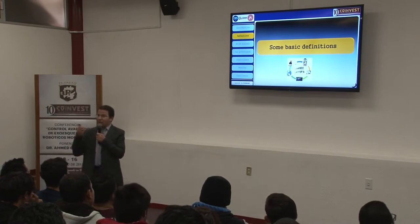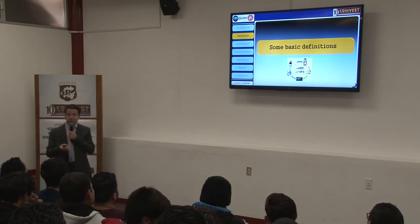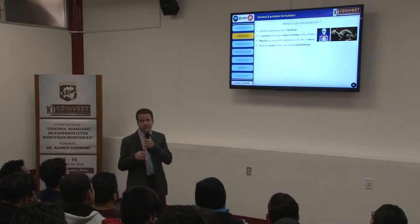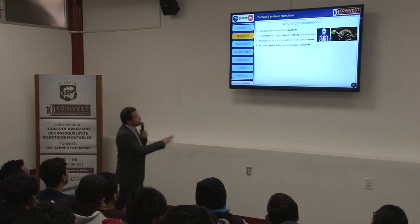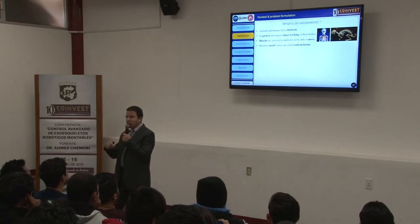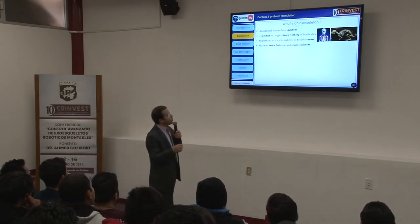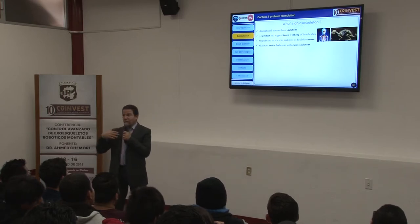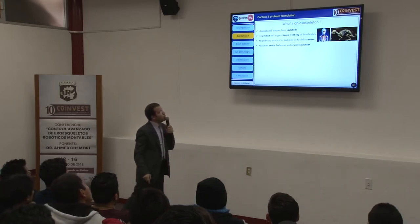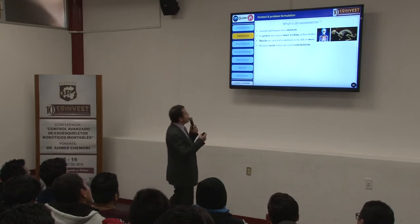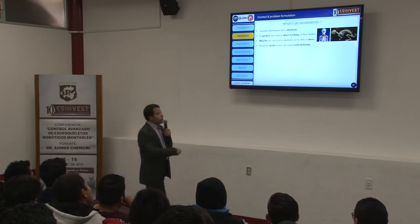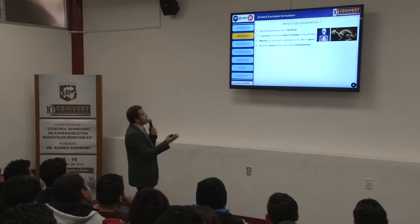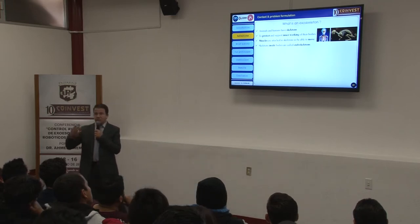Before going further, let me introduce basic definitions to understand what an exoskeleton is, where we can use it, and what challenges exist for design and control. First, what is an exoskeleton? We can see a common point between animals and humans: we have skeletons inside our body. A skeleton is a rigid structure inside the body whose purpose is to protect and support the inner workings of the body. We have muscles attached to this skeleton to enable movement. These internal skeletons are called endoskeletons.